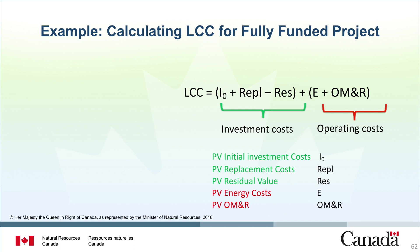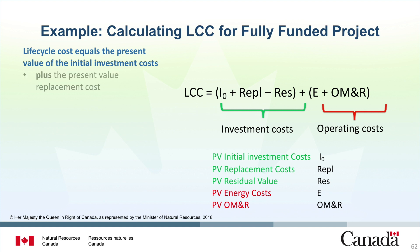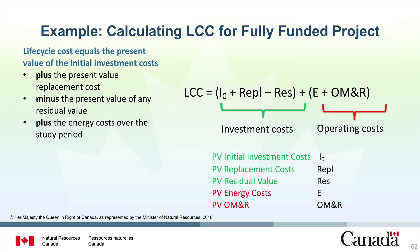Now let's list the data inputs for the alternative case. The alternative is to install a heat pump system to replace the old system. Because you are purchasing and installing the equipment, there will be an initial upfront cost of $2,841. There will be no replacement cost because the useful life of the equipment is 20 years and this is a 15-year study period. There will be some residual value because there are 5 years or 25% of useful life remaining at the end of the study period, which equals $710 of the initial cost. The electricity consumption will now be 16,290 kilowatt hours at 13.08 cents per kilowatt hour, the annual maintenance cost will be $450, and the compressor will require repair in year 8 at a cost of $1,200.